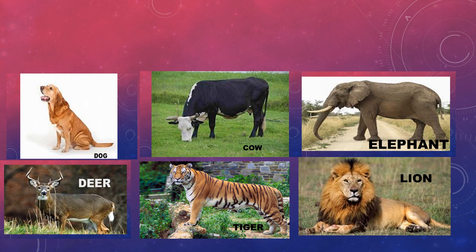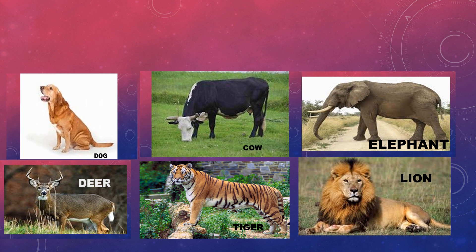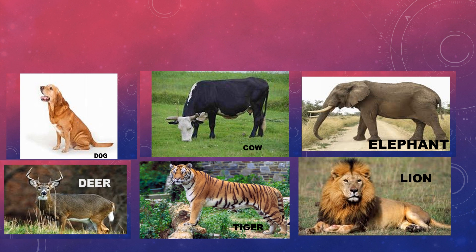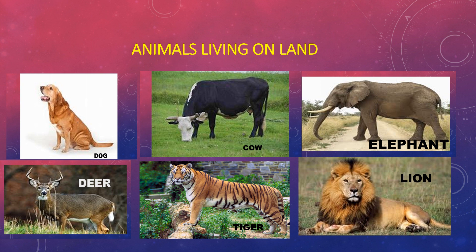I am going to show you some pictures of animals. Can you tell me what is common in all these animals? Where do they live? Yes, you are correct. These animals live on land. Dog, cow, elephant, deer, tiger and lion live on land.